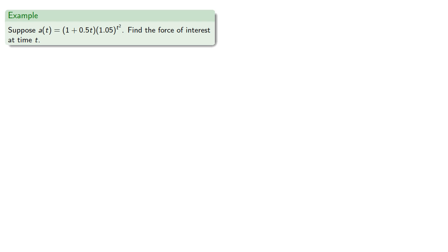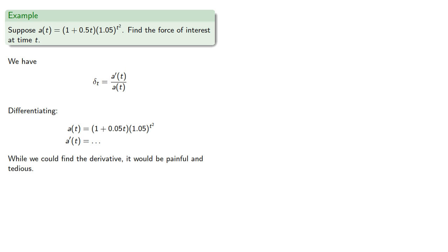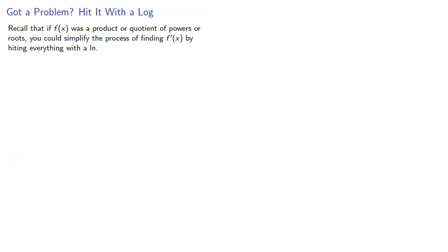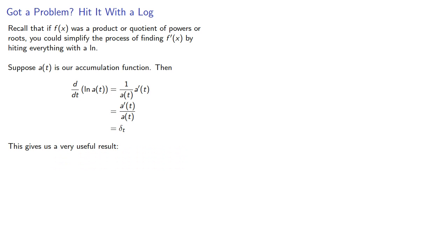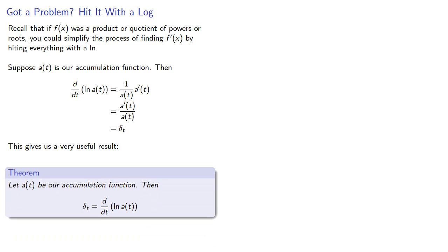Let's take another accumulation function and find its force of interest. We could find the force of interest as the ratio of the derivative to the function, but differentiating would be painful and tedious. Recall that if f(x) is a product or quotient of powers or roots, you can simplify finding the derivative by hitting everything with a log. The derivative of log of a(t) gives us a'(t) over a(t), which is our force of interest. This gives a very useful result: the force of interest is the derivative of the log of a(t).